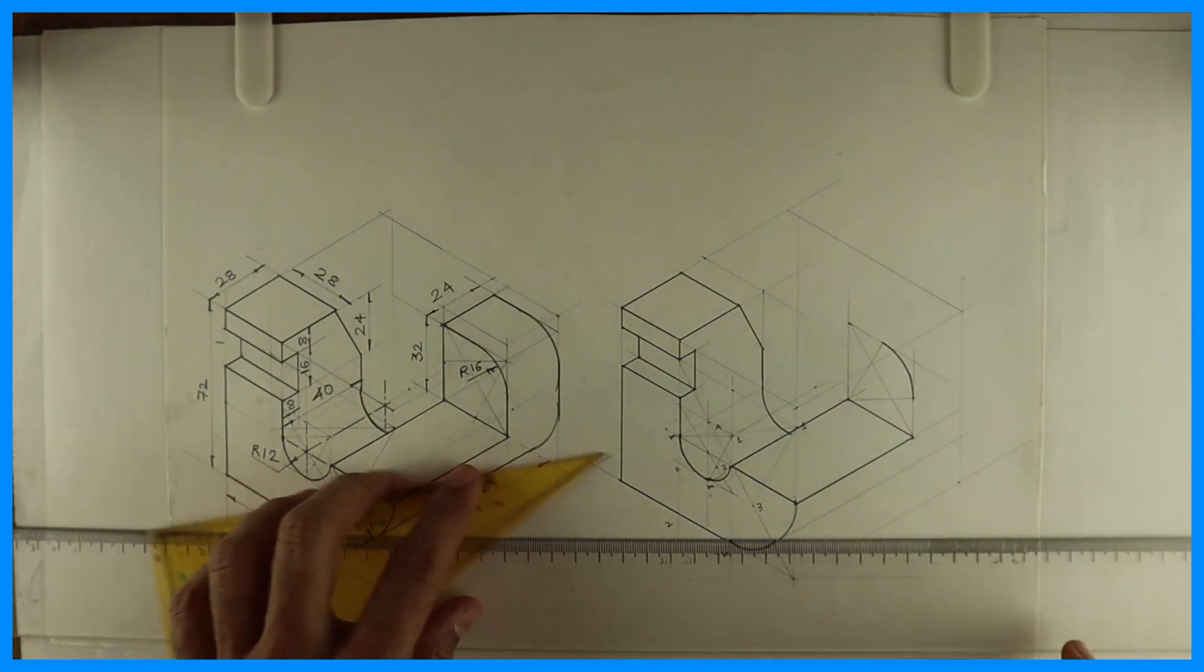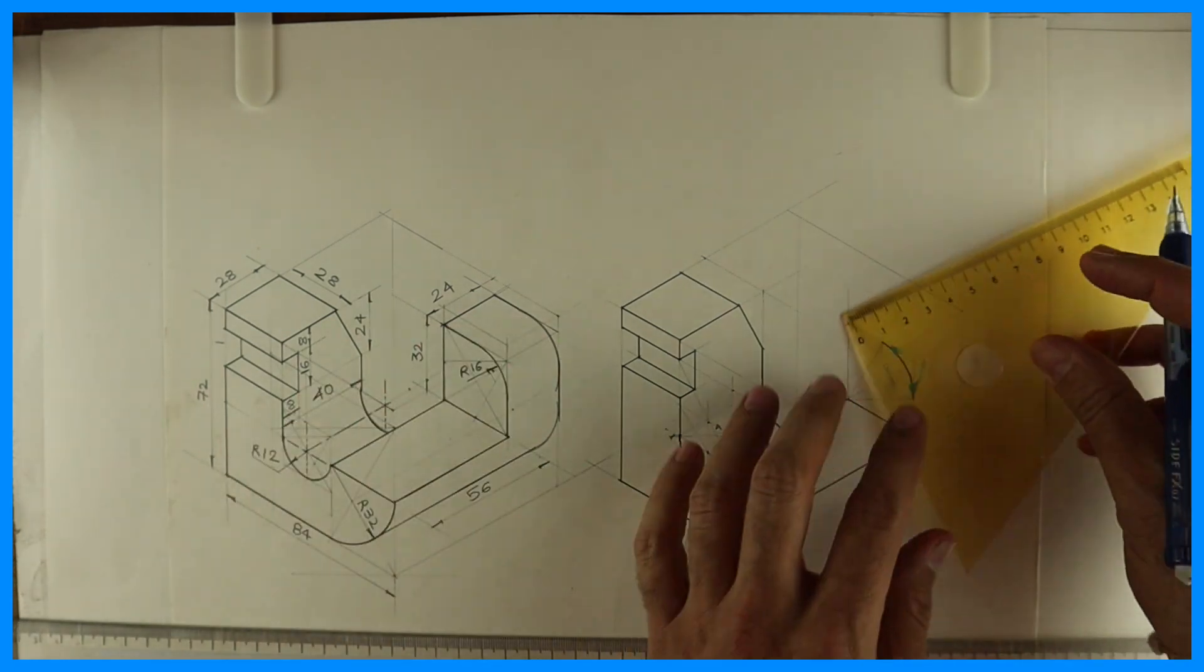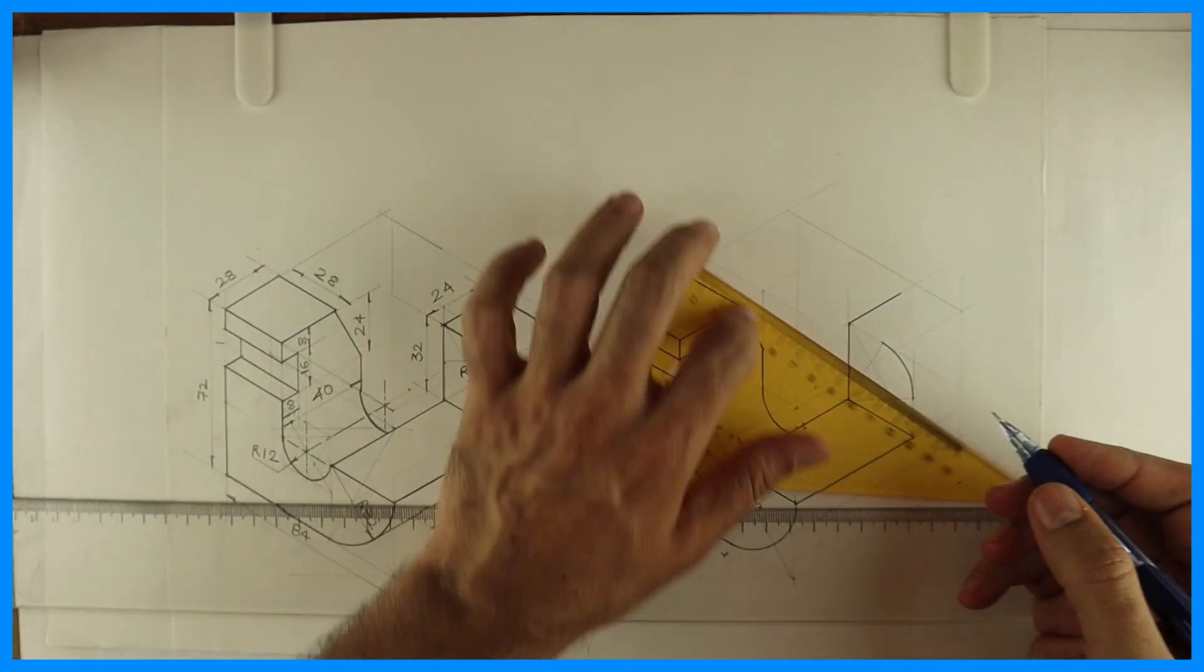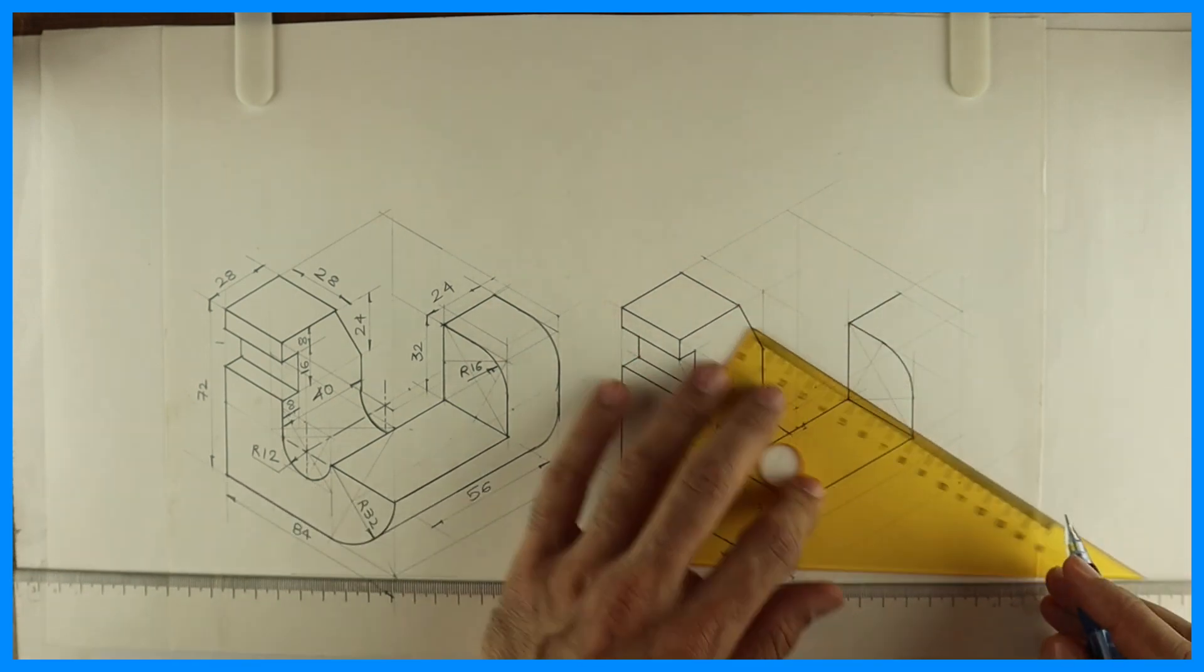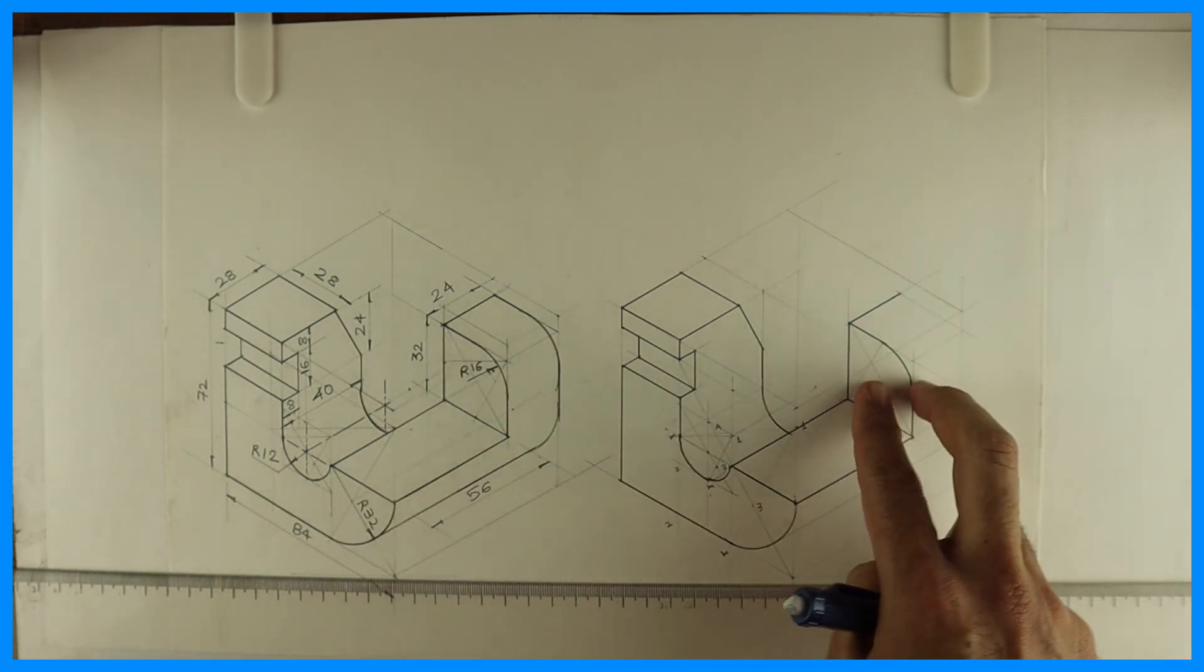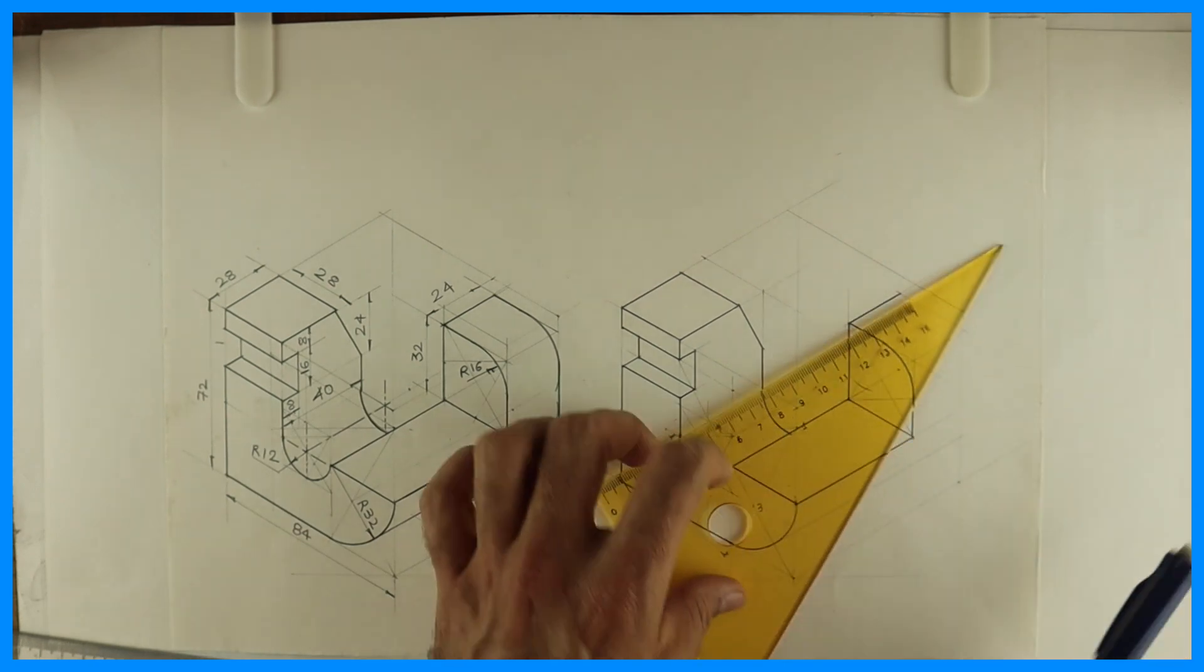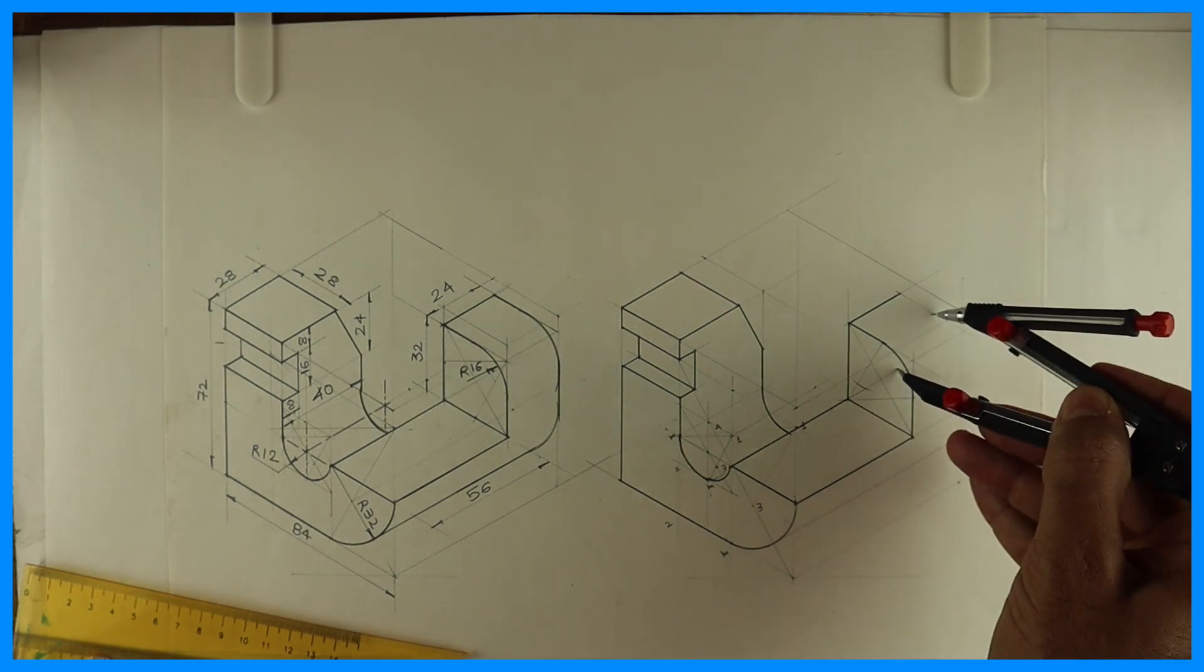Now take the same radius, go behind. How much you have to go behind? You have to go behind by 24. So I'll go behind by 24. This will be dark. Now this radius, right? We have to draw it behind. How much behind? 24. So from this center point, you go behind by 24. Take this radius, go behind by 24, and draw arc.